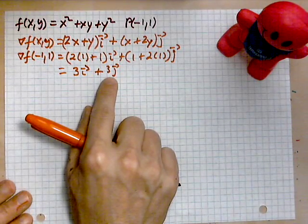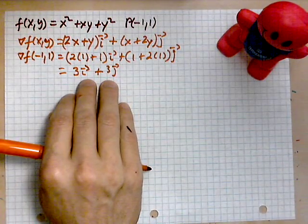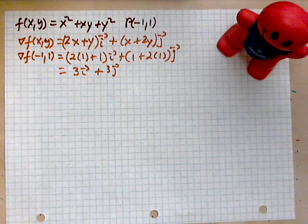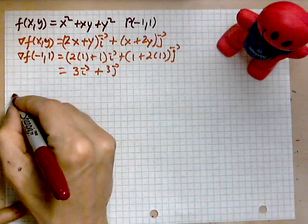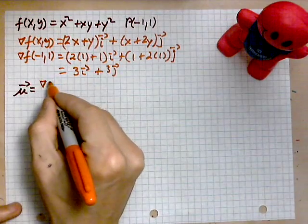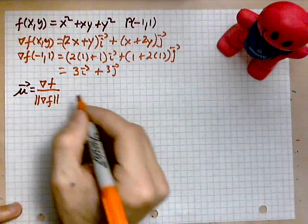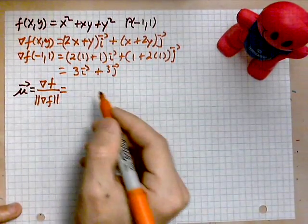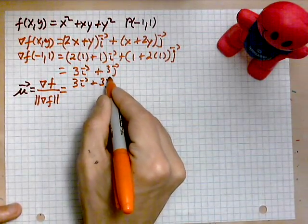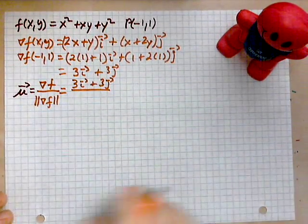Once we have the gradient, we want to turn it into a unit vector because we care only about the direction of most rapid increase or decrease. We define u to be the gradient of f divided by its magnitude. What we have is 3i + 3j, and now we need to find the length of this vector.